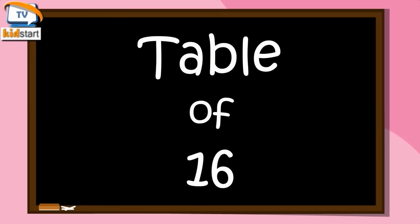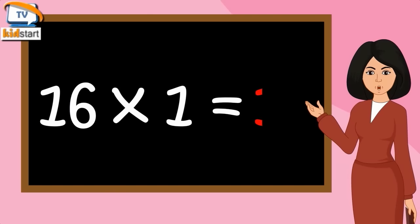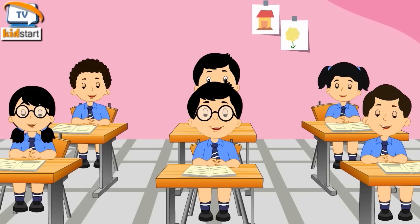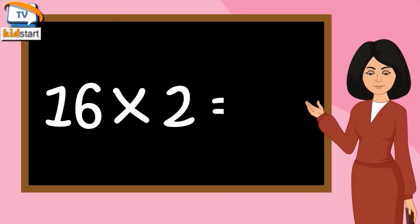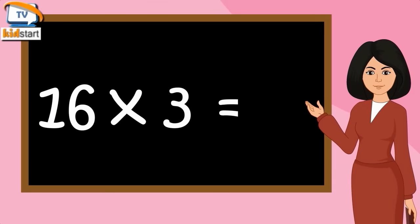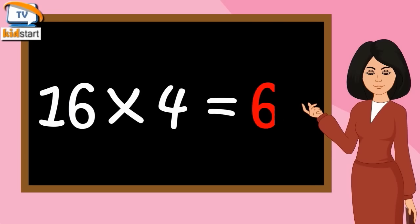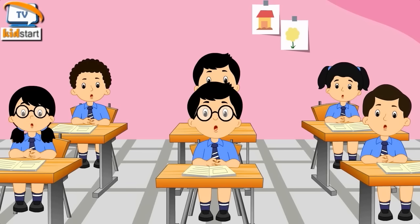Table of Sixteen. Sixteen ones are sixteen. Sixteen twos are thirty-two. Sixteen twos are forty-eight. Sixteen fours are sixty-four.